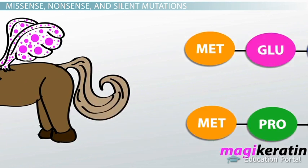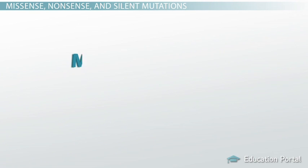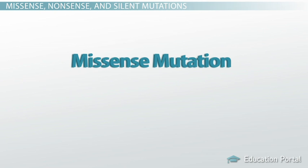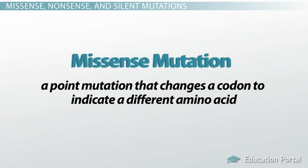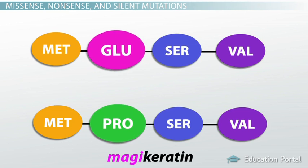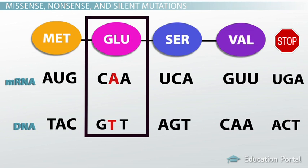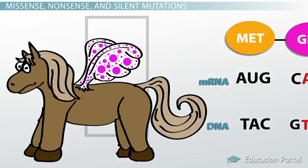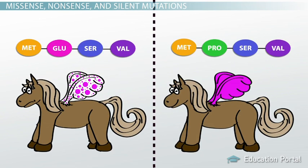Our pony has changed — he can still fly, but his wings are all spotted, and he may have trouble attracting a mate. This is an example of a missense mutation. A missense mutation is a point mutation that changes a codon to indicate a different amino acid. This usually changes the polypeptide and therefore can change the function of the overall protein. We call it a missense mutation because it causes the protein to be incorrectly translated from the original gene.